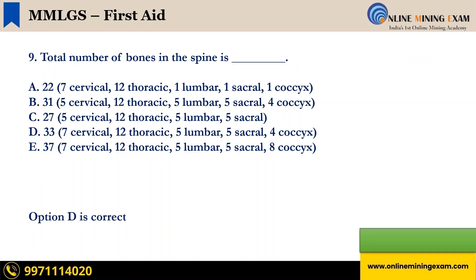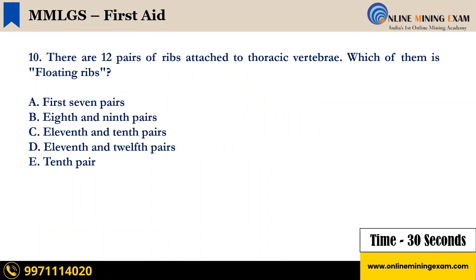Time up. The correct answer is D — 33. Next question: there are 12 pairs of ribs attached to thoracic vertebrae. Which of them are floating ribs? A — first seven pairs; B — eighth and ninth pairs; C — eleventh and tenth pairs; D — eleventh and twelfth pairs; E — tenth pair. Your time starts now.